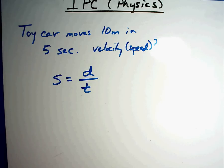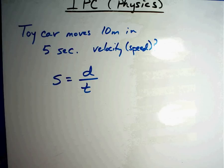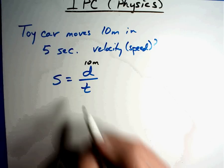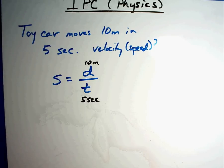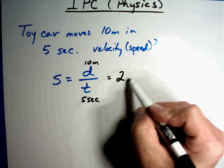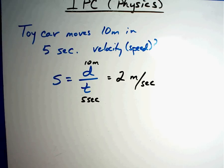Any time you work these, always write the formula first. Now let's work the problem. The toy car moves 10 meters — that's the distance — in 5 seconds — that's the time. So it's simple division: 10 meters divided by 5 seconds. 10 divided by 5 is 2. The units don't change: 2 meters per second. That would be the answer you'd look for on the test.